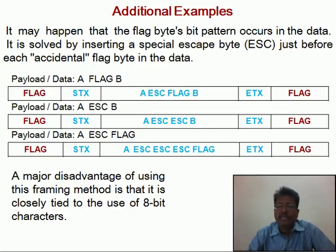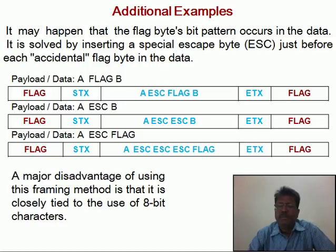The third frame shows that both escape and flag bytes are part of the data. To treat them as data, two escape bytes are used: one escape character to handle the escape as data, and a second escape character to handle the flag. A major disadvantage of this framing method is that it is closely tied to 8-bit characters and does not allow characters to have an arbitrary number of bits.